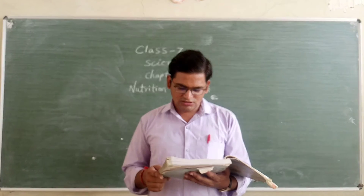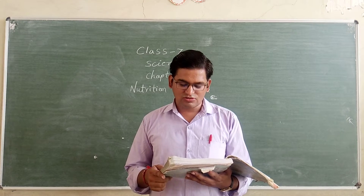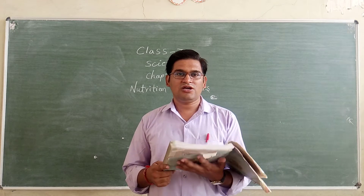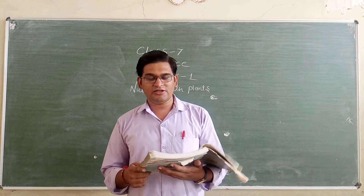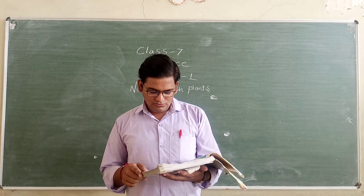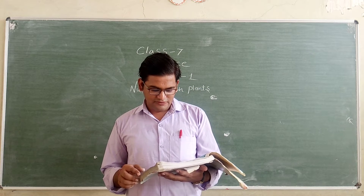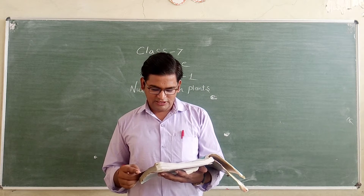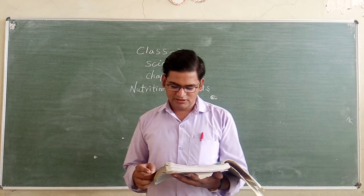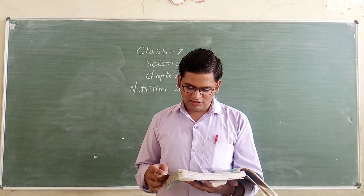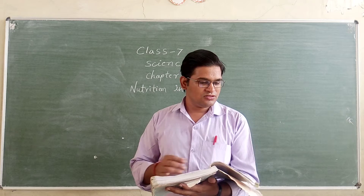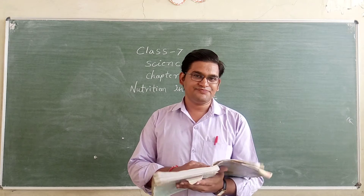Starch is also a carbohydrate. Activity 1.1: Take two potted plants. Keep one in the dark for 72 hours and the other in sunlight.